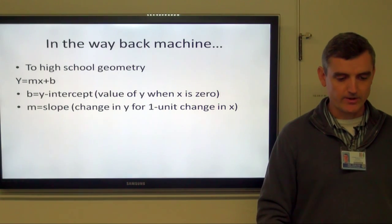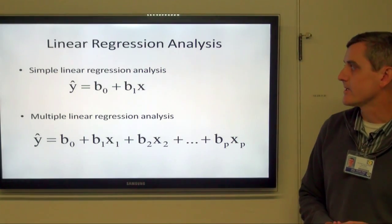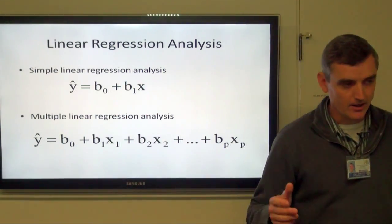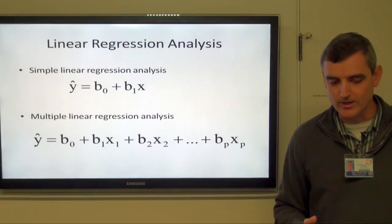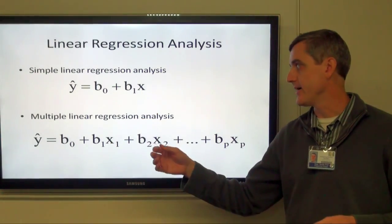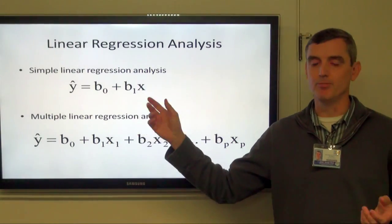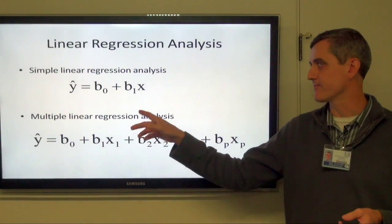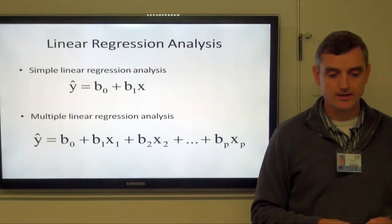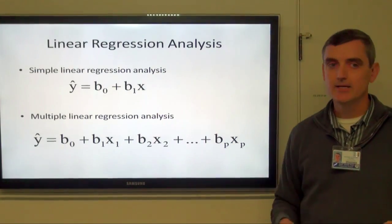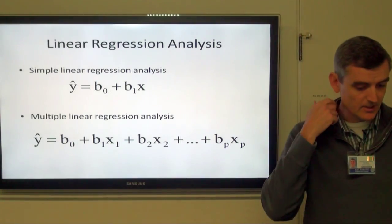We use that equation but write it a little differently for linear regression analysis. We call it y-hat, which just means it's an estimate of y. The m and b are both called b but have different labels: b0 is the y-intercept and b1 is the slope. That would be simple linear regression.